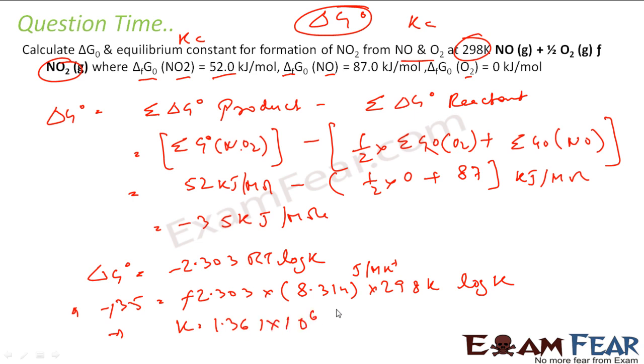This is joule per mole. Minus 35, so everything gets cancelled actually. All the units get cancelled. I get K to be 1.36 into 10 to the power 6.